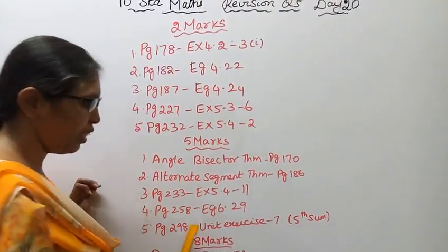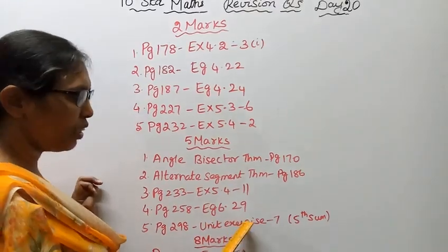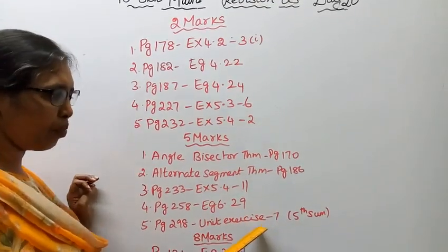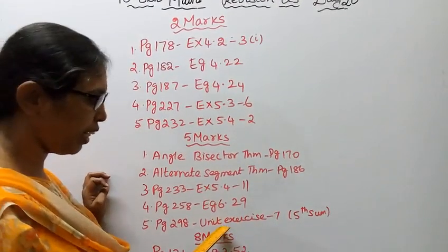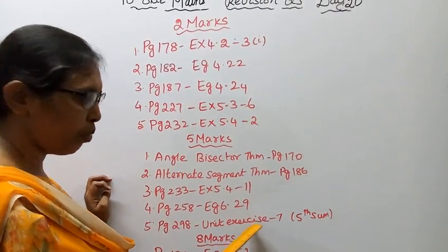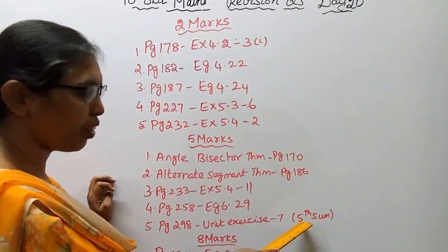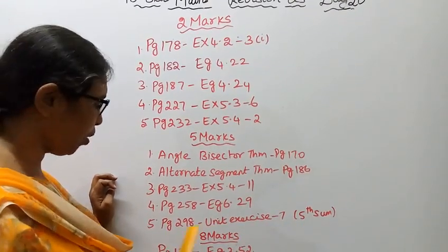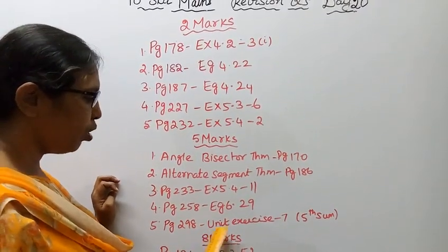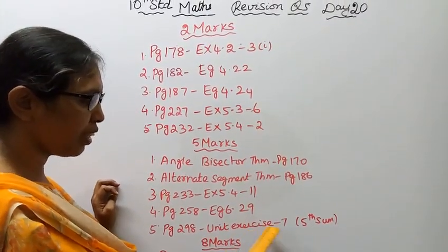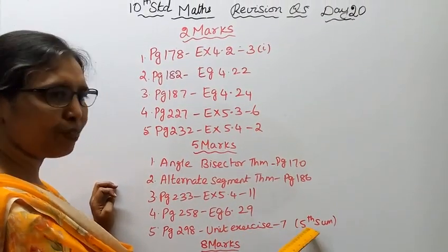Page 298, unit exercise 7. Mensuration written here — the mensuration unit exercise. Fifth is an important sum, page 298, unit exercise 7.